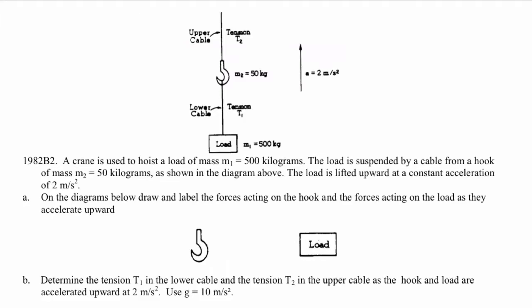A crane is used to hoist a load of mass M1 equals 500 kilograms. The load is suspended by a cable from a hook of mass M2, 50 kilograms, as shown in the diagram above. The load is lifted upward at a constant acceleration of 2 meters per second squared.